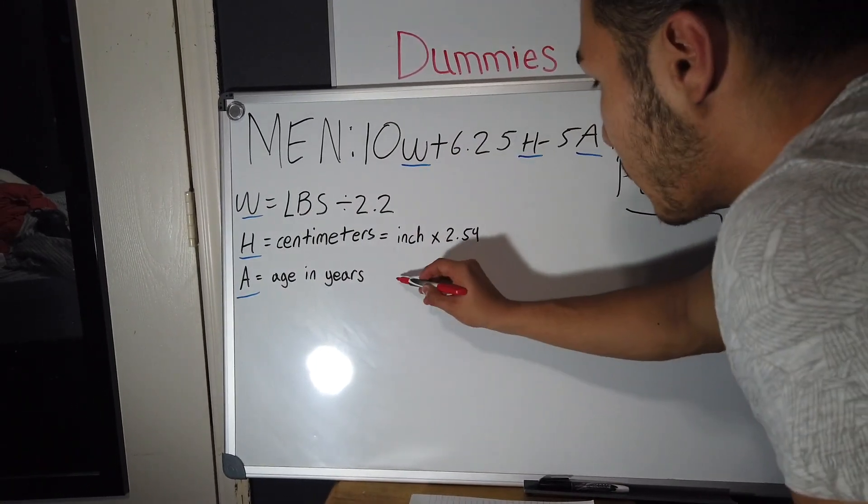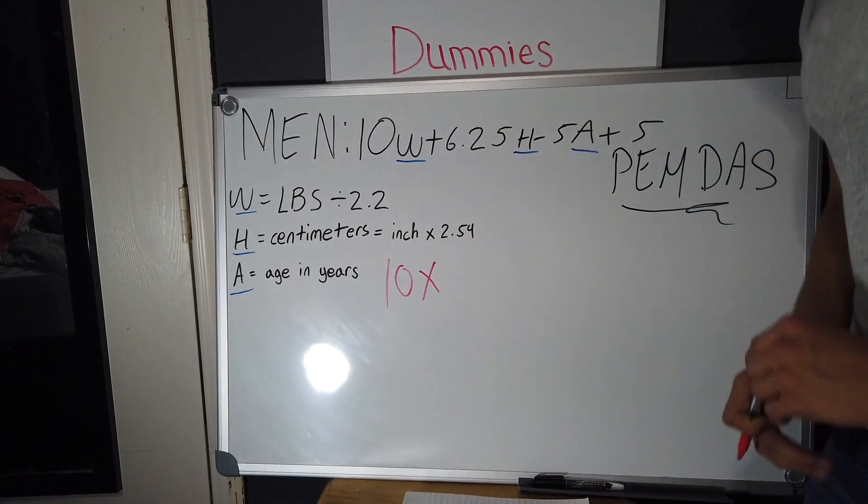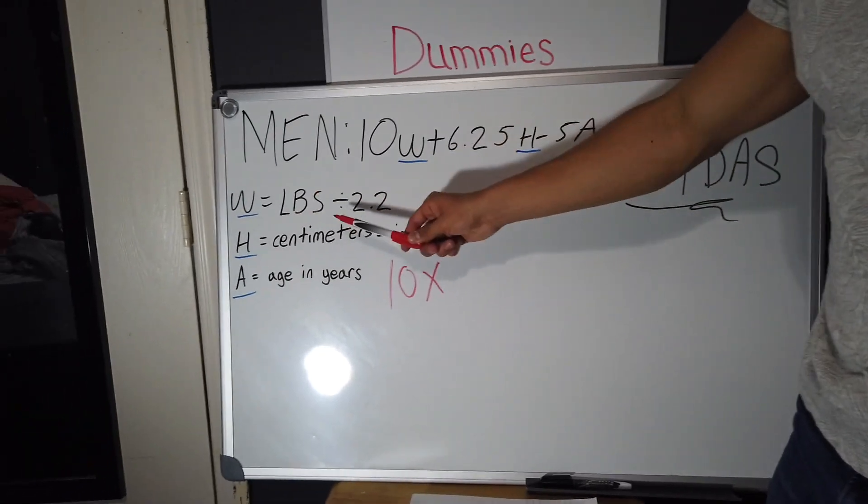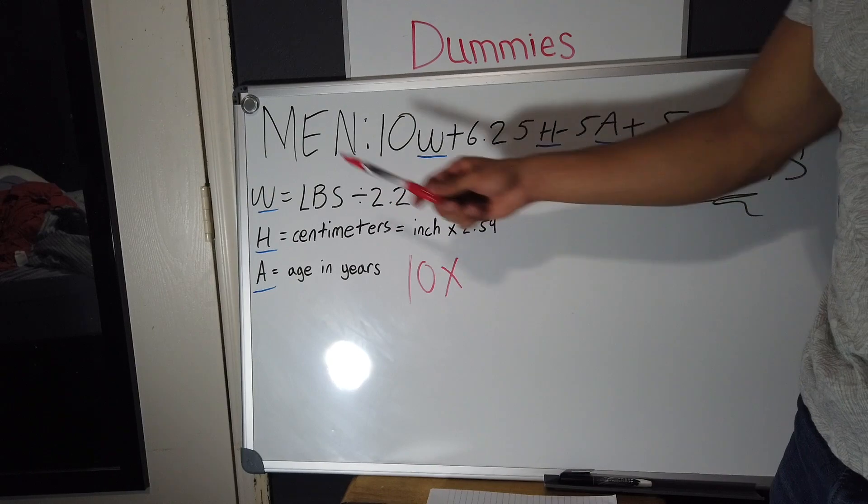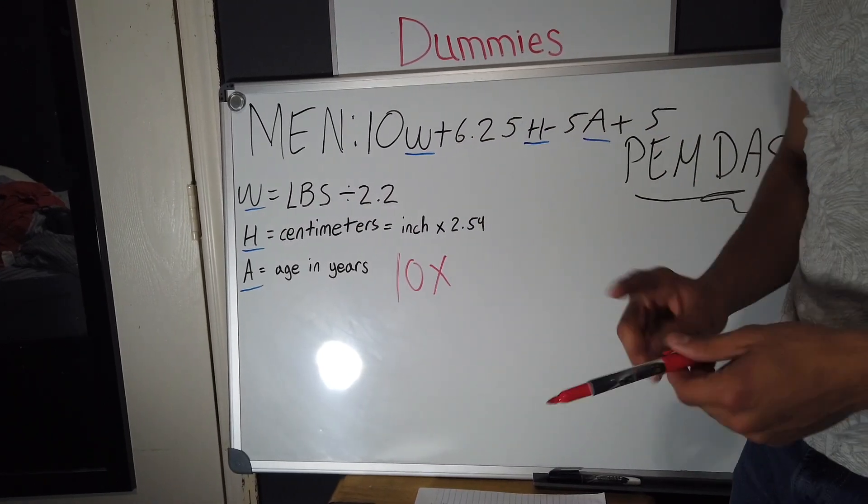So I'm gonna go ahead and start working the problem now. We already have it down here, so I'm just gonna bring it down here to simplify it for y'all. So it's gonna be 10 times, I'm 163 pounds, so you do 163 divided by 2.2 to give you your weight in kilograms. So my weight in kilograms would be 74.